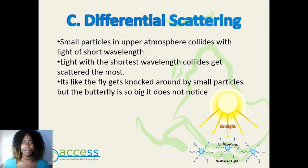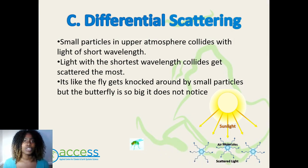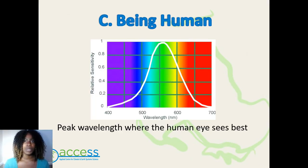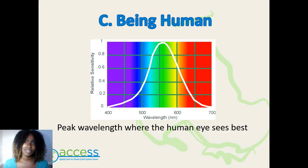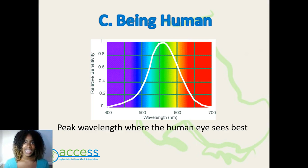A good example is the fly and the butterfly. The butterfly doesn't really feel anything when it flies — it doesn't get knocked around because it's so big, whereas the fly gets knocked around easily by the small particles. This graph shows the peak wavelengths a human eye can see best. We expect to see violet since it has the most short wave radiation, but instead we see the sky is blue. This is because our human eye is poorly sensitive to violet and is strongly sensitive to blue. That is why we see blue skies, not violet skies. Bees, on the other hand, can see violet — their sensitivity allows them to.